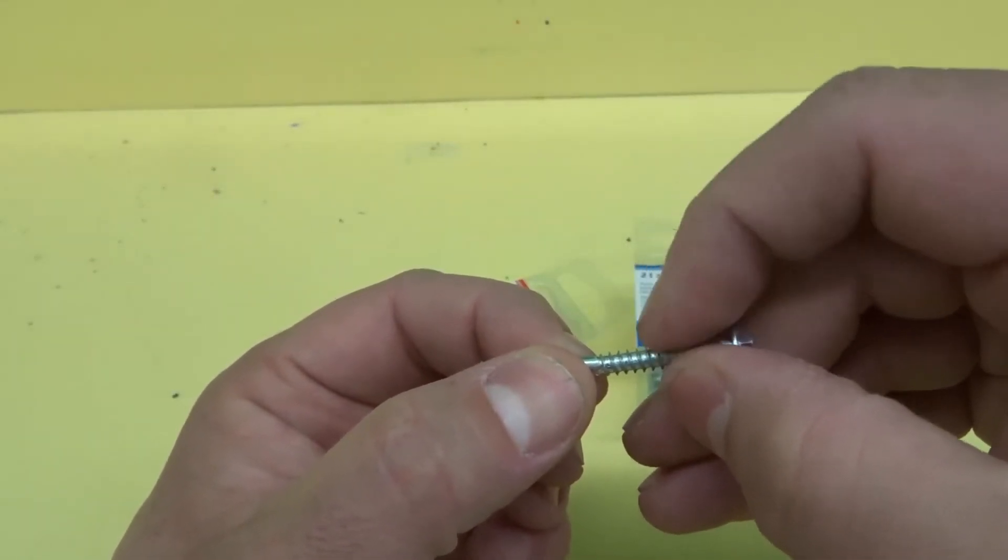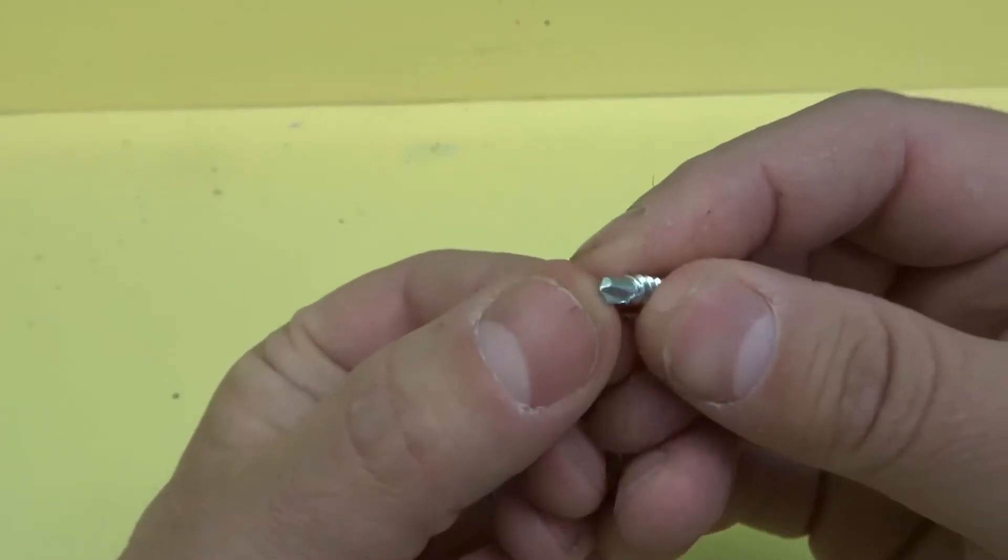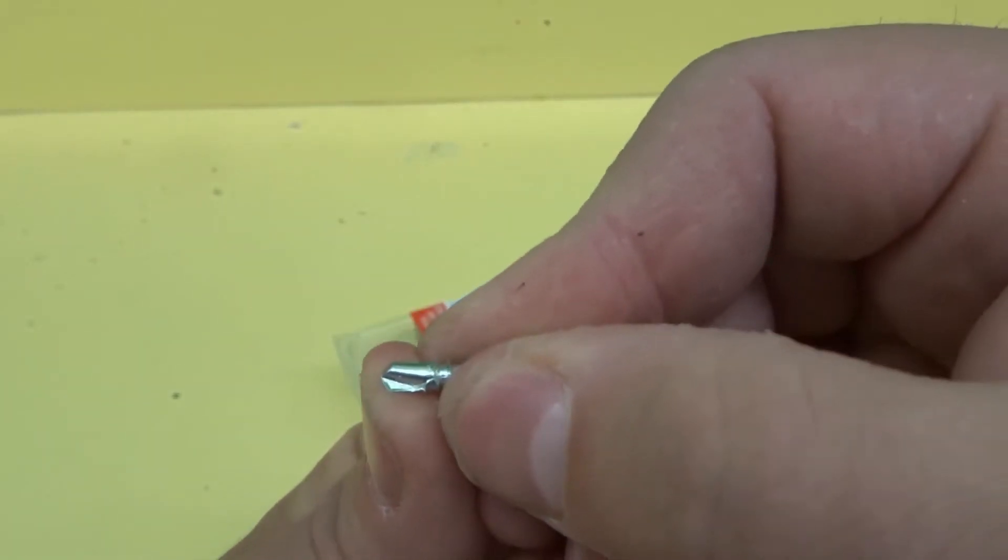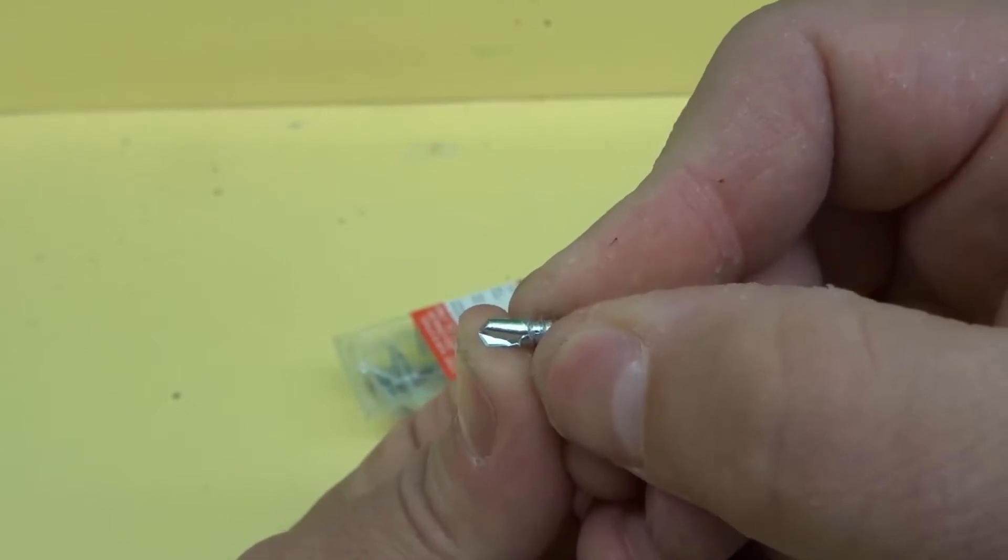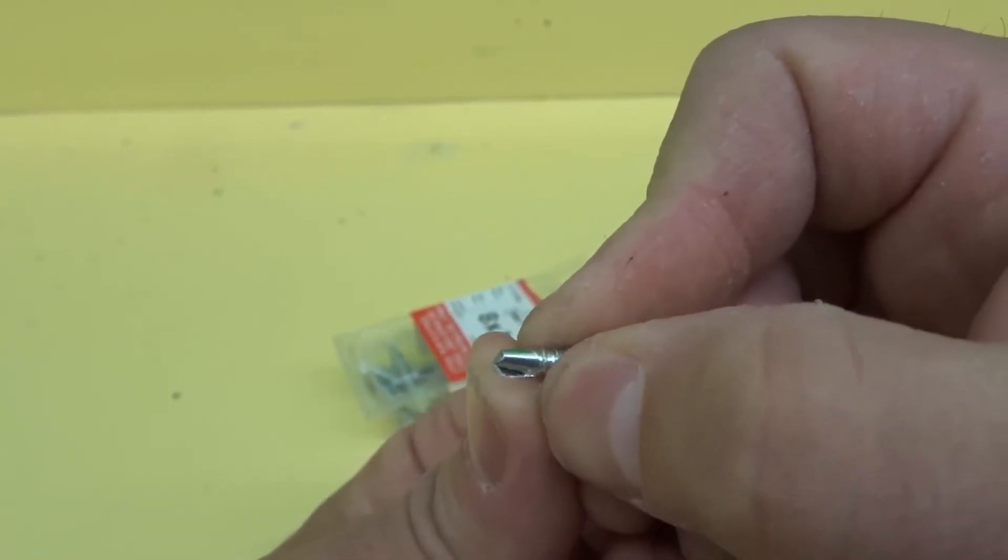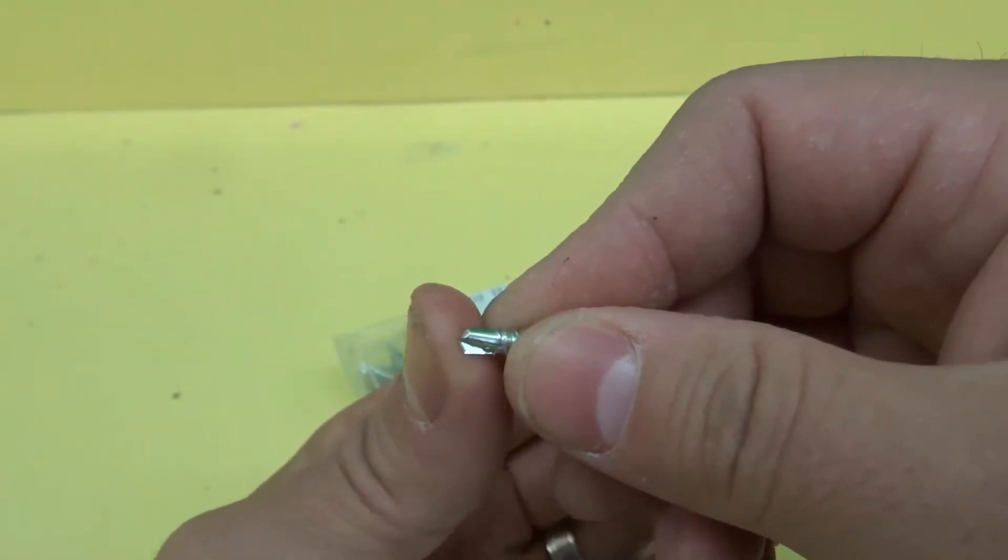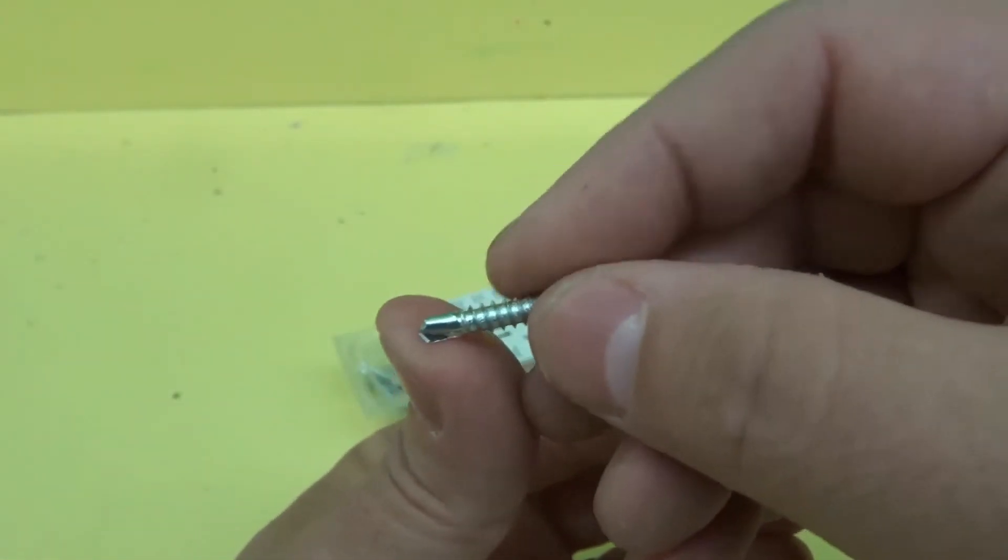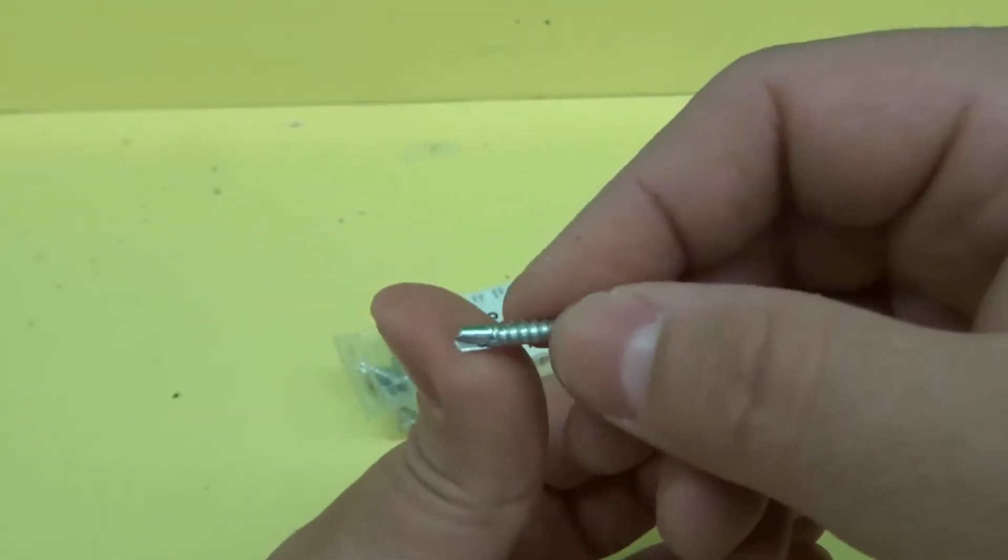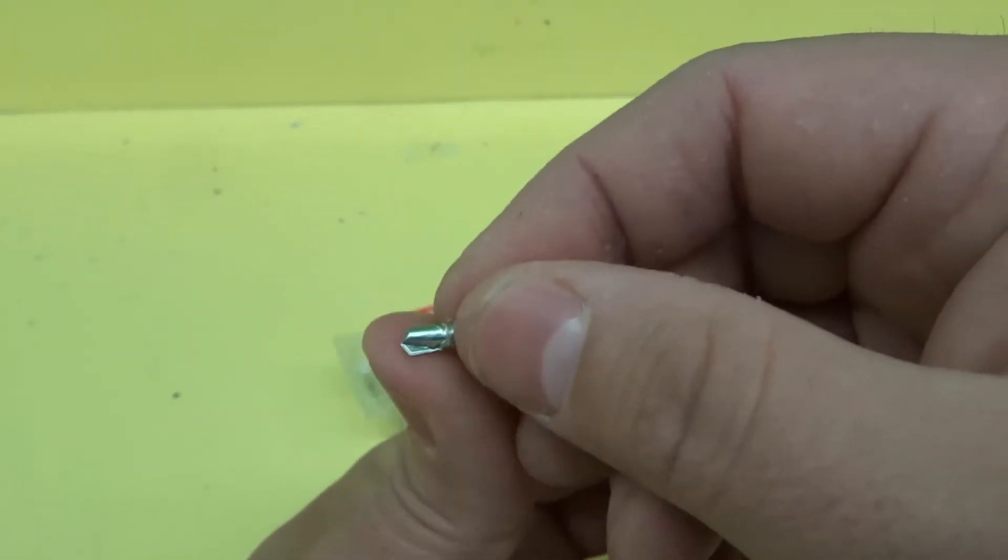Now this piece at the tip is designed to drill a pilot hole for the screw. If you're drilling into metal—say sheet metal—and it doesn't have a pilot hole, you're going to need one of these because you can't just drill right into metal; you need a pilot hole first.